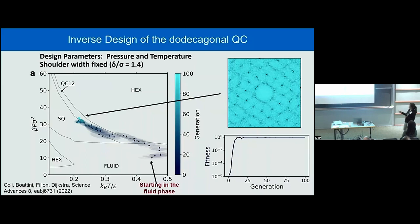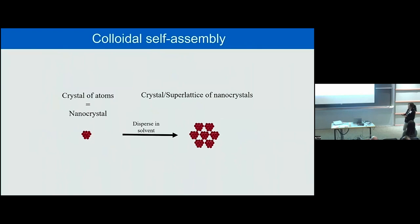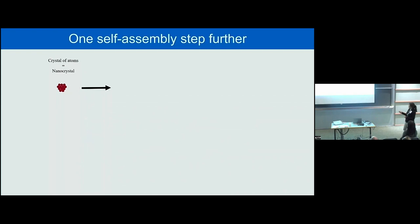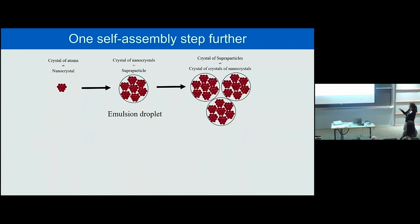The next step is hierarchical self-assembly. We start with just colloidal particles, disperse them in solvent, exploit Brownian motion, and make a crystal or superlattice of these nanocrystals. But can we also perform a self-assembly step further? Yes — we can perform this self-assembly also in spherical confinement of an emulsion droplet. By evaporating the solvent, we can make a supraparticle. We can then take all these supraparticles and perform another self-assembly step, making a crystal of crystals of all these nanocrystals.